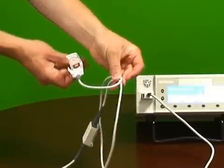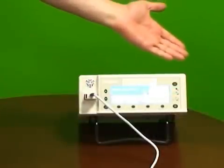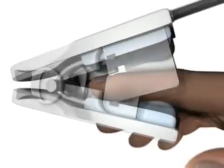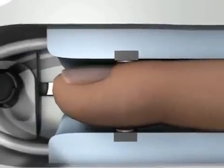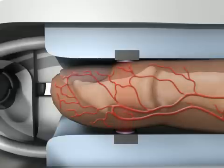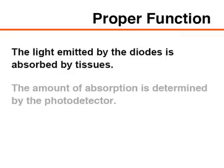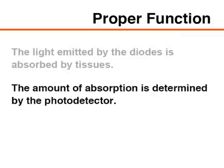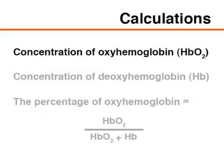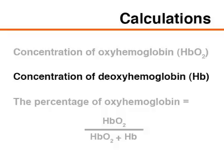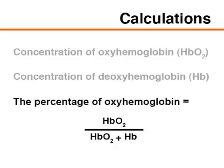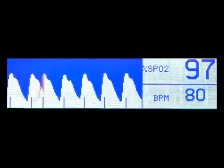Pulse oximeters consist of a peripheral probe and a small microprocessor unit. Traditionally, the peripheral probe contains a photodetector and two light-emitting diodes. The two light-emitting diodes emit light of different wavelengths. The light emitted by the diodes is absorbed by tissues, and the amount of absorption is determined by the photodetector. Using this information, the microprocessor determines the concentration of oxyhemoglobin and deoxyhemoglobin, respectively.